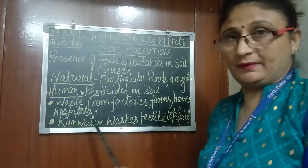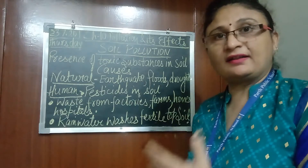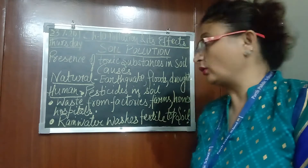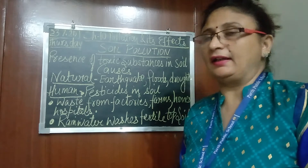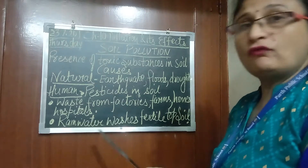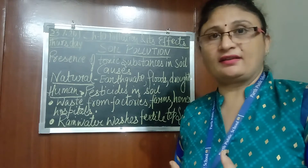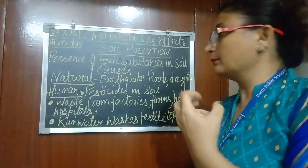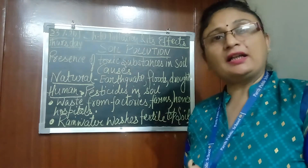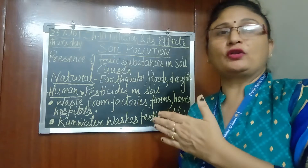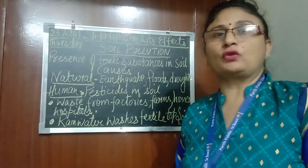Waste from factories, farms, homes and hospitals also causes soil pollution. So many wastes are thrown on the soil from factories, homes and hospitals, which affects the fertility of the soil. Rainwater also leads to soil pollution because it washes away the topmost fertile soil which is rich in humus, a substance in soil which is very good for growing crops.